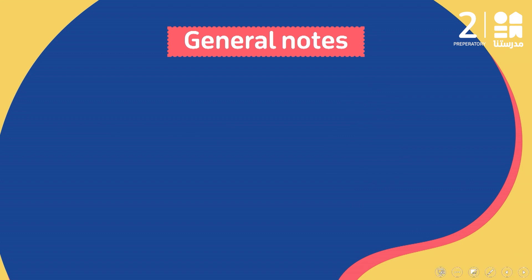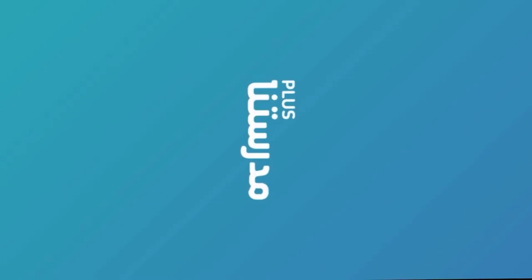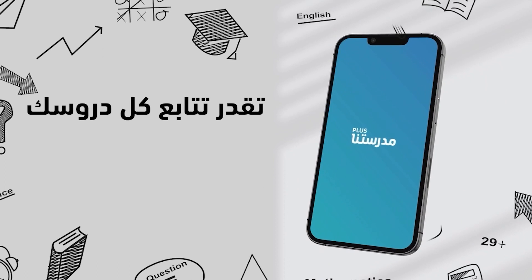Here we have general notes. We are going to learn the difference between 'tall' and 'long.' 'Tall' is used to describe vertical length or height. For example, with people: he is a tall man, she is a tall girl. And with buildings: this is a tall building.